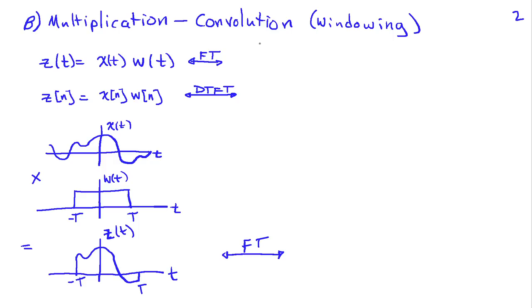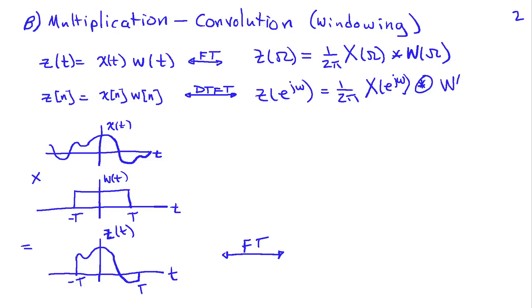Well, the property here is the dual of what we just looked at. A minute ago, we looked at convolution in the time domain transforms to multiplication in the frequency domain. Here, we see that multiplication in the time domain transforms to convolution in the frequency domain. So Z(ω), the Fourier transform of z(t), is going to be 1/(2π) times X(ω) convolved with W(ω). And in the discrete time Fourier transform case, Z(e^jω) is equal to 1/(2π), the convolution of X(e^jω) with W(e^jω).